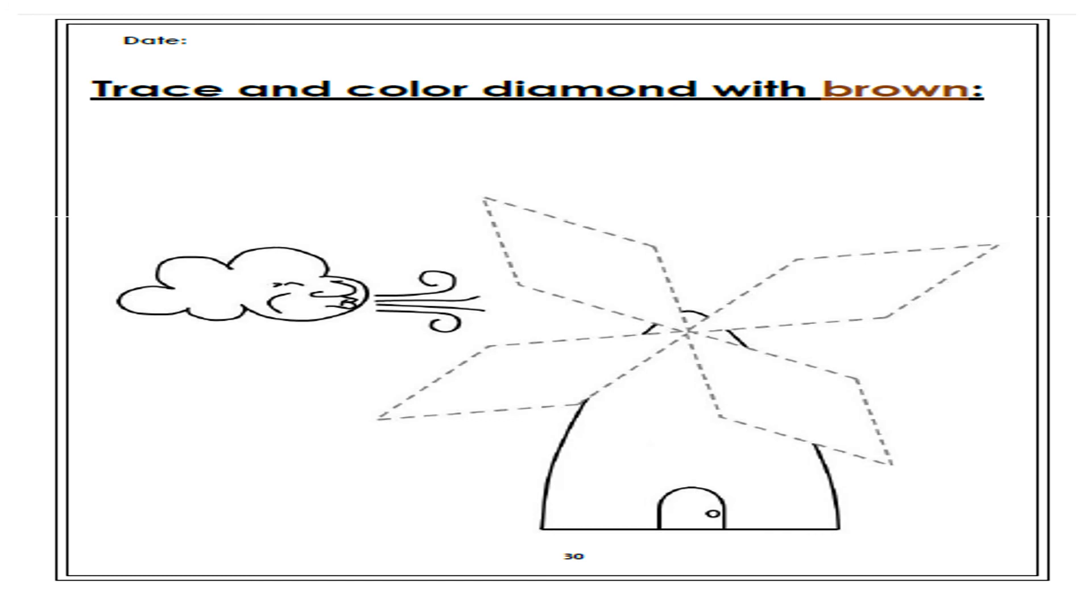Now, let's all open page 30. Let's trace the diamond shapes of this very nice windmill. And let's count. Let's color it with brown color.